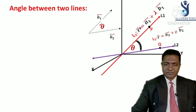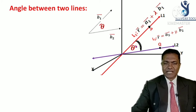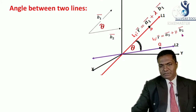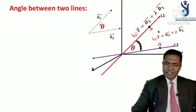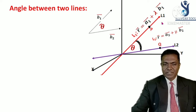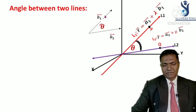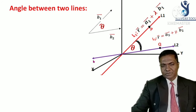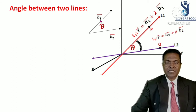Looking at the equation of L1, vector B1 stands for the direction of line L1, and vector B2 stands for the direction of line L2. So the angle between lines L1 and L2 is nothing but the angle between the direction vectors B1 and B2. Vector B1 is drawn parallel to L1, and vector B2 is parallel to L2.